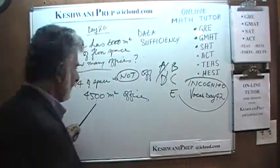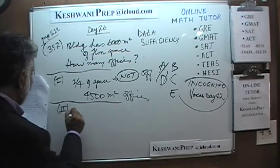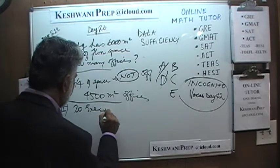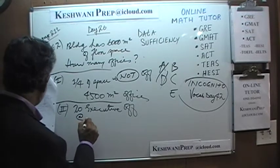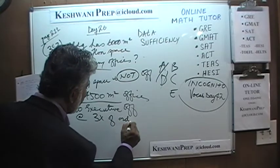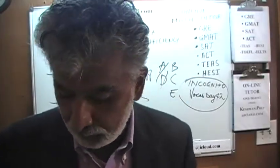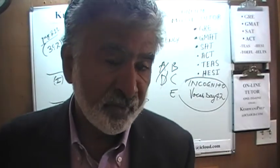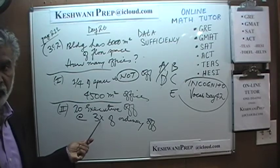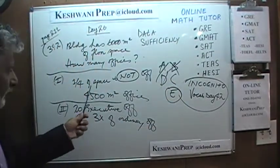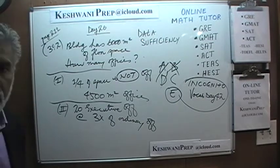Statement 2 tells us there are 20 executive offices and each takes three times the floor space of an ordinary office. Is there enough to figure out how many offices there are? Of course not — the answer is not B. Even when we put the two statements together, the answer is E. There is not enough information to figure out how many offices there are.